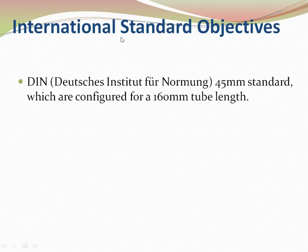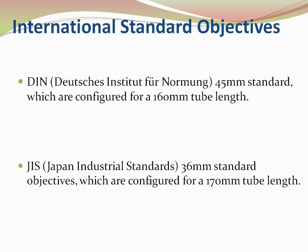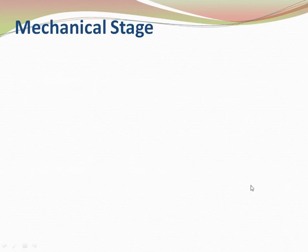There are two standards for objectives. DIN is the 45 mm standard configured for 160 mm tube length. The other is JIS — Japanese Industrial Standard — which is a 36 mm standard objective configured for 170 mm tube length.